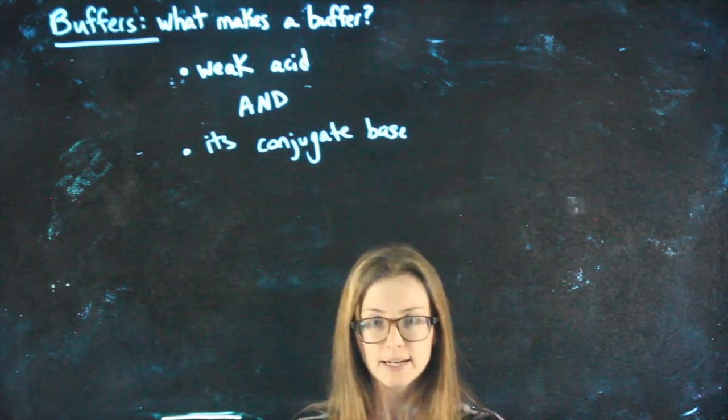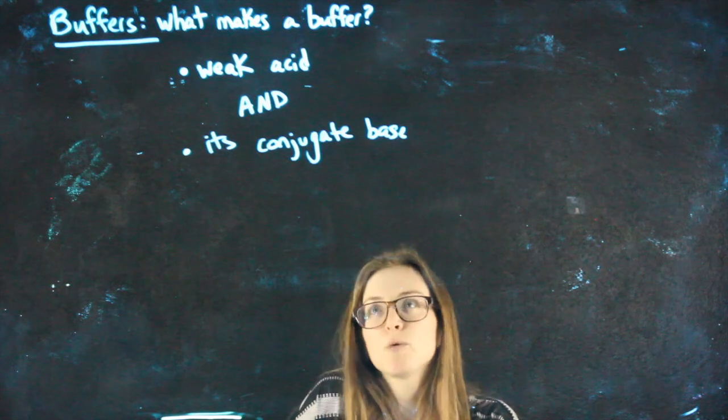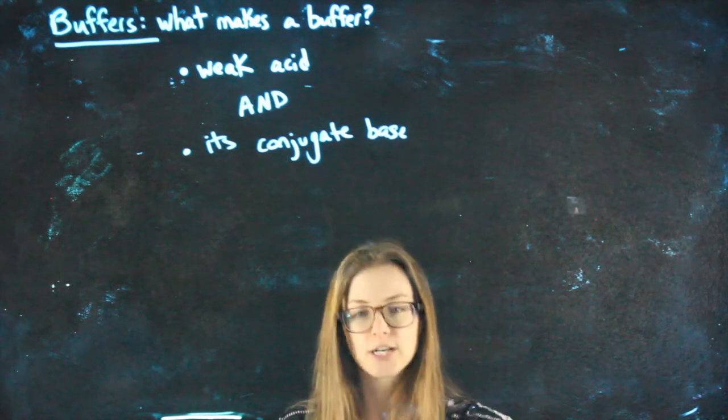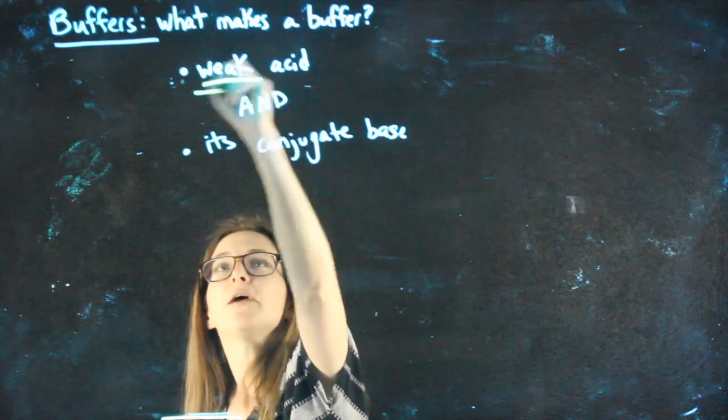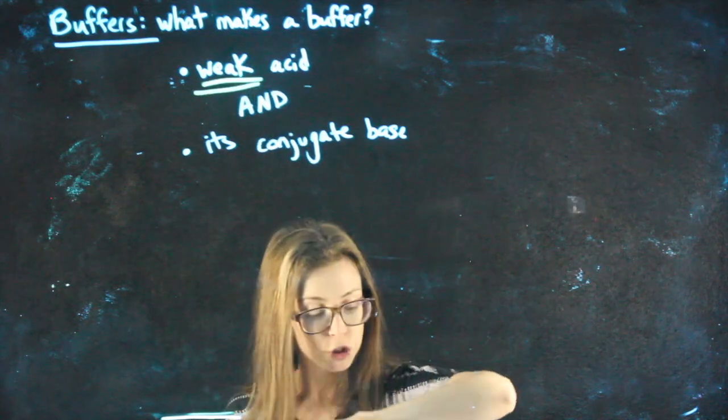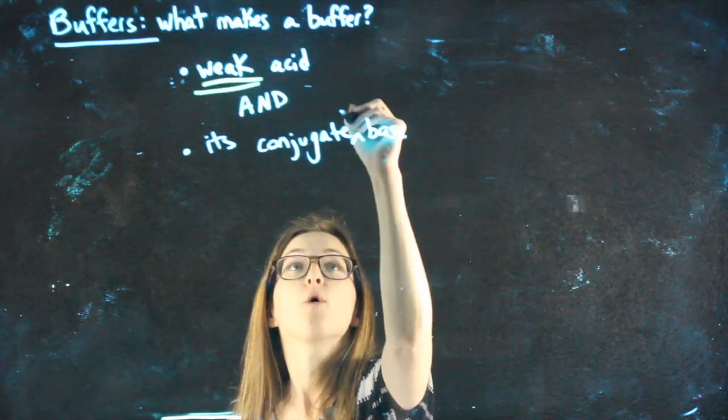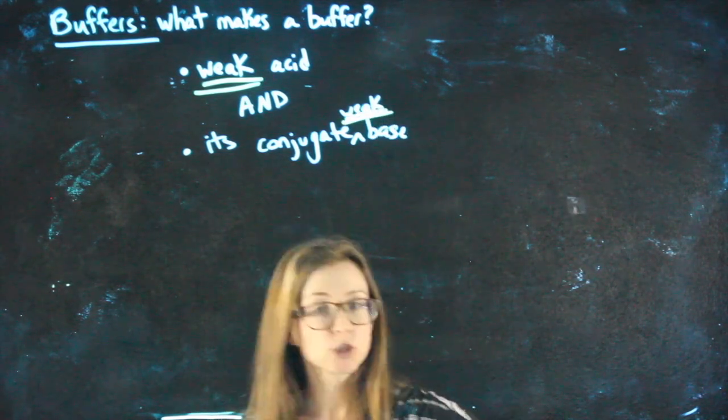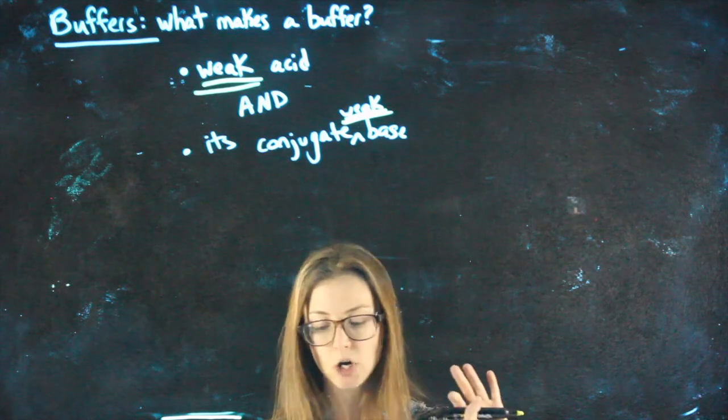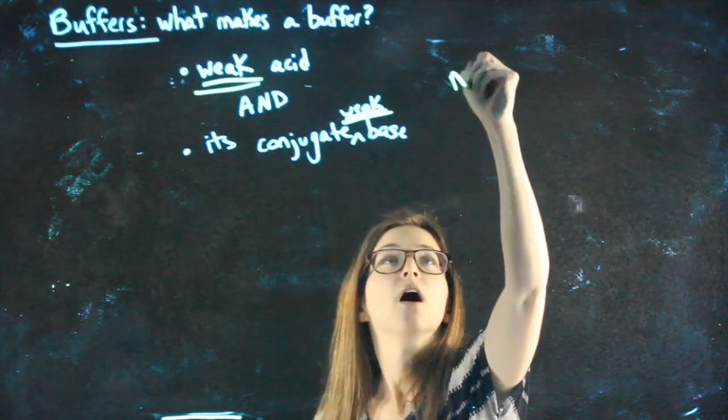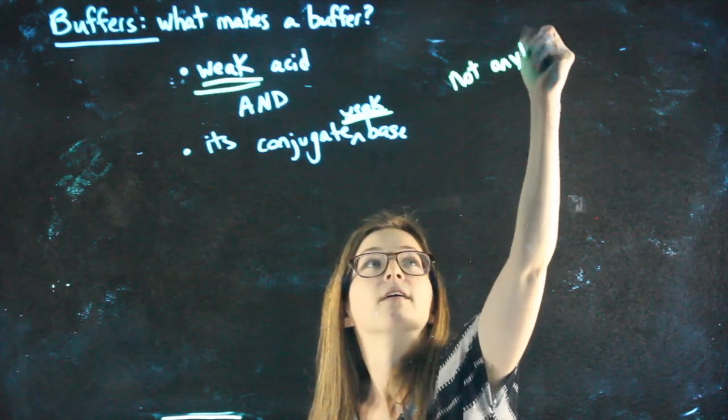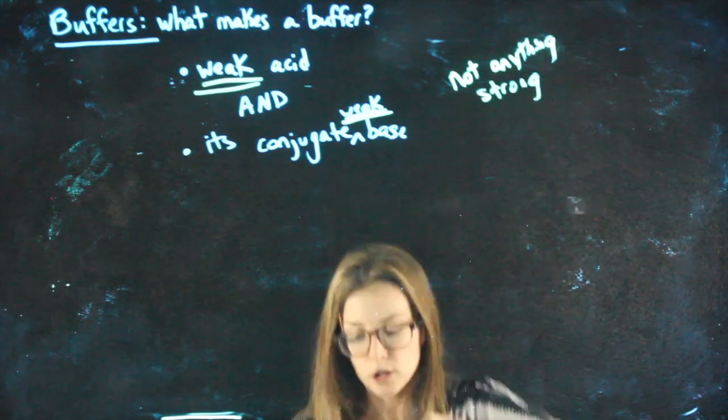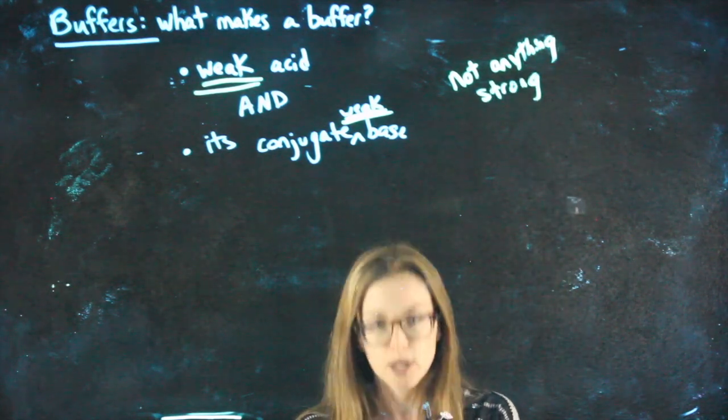So, you just did all of that practice with conjugate pairs. Essentially, what we need is a conjugate pair. The only thing, the only little asterisk I'll give you, it has to be a weak acid and its conjugate weak base. If we have a strong acid or a strong base, not a buffer. So, not anything strong. We're looking for acid-base pairs that are both weak.